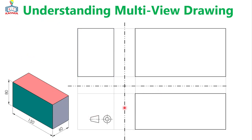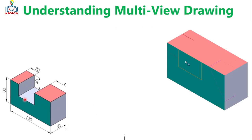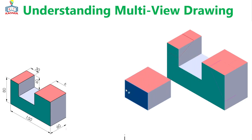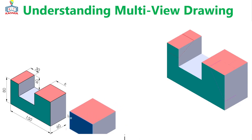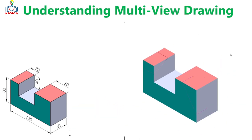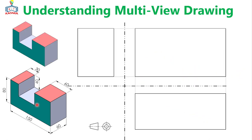Now, what will the views look like if we remove some portions of this object? If we remove this upper portion, what will be the multi-view drawing of this part? Let me show you. Now let's just remove this part — and finally we have this shape. So what will be the front, the top, and the right side views of this part? Let's start from the front view.